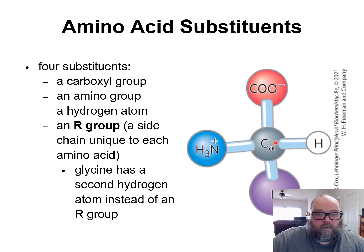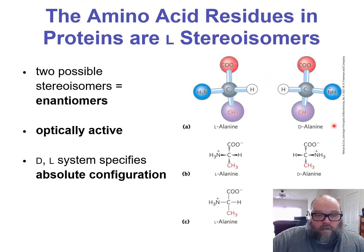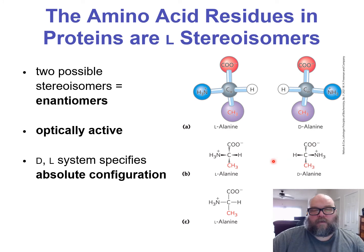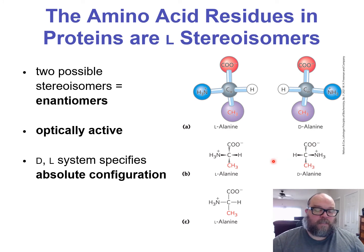This R group is always going to be attached to the alpha carbon. That R group can be as simple as a hydrogen, as we see in glycine, or it can be more complex, and we'll see that in a few slides.